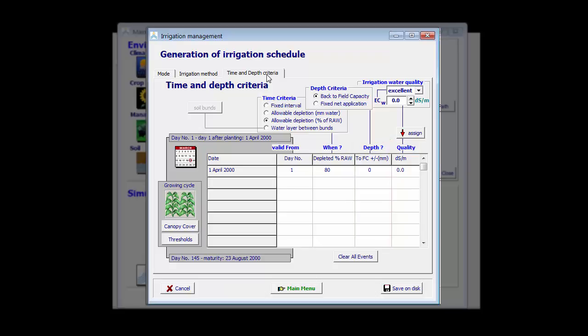In the area with furrow irrigation, farmers typically apply a depth of 30 mm. So, I select a fixed application depth of 30 mm.